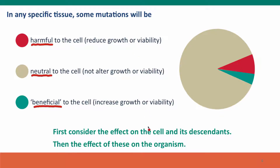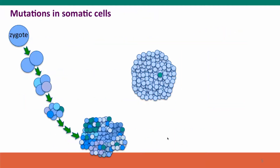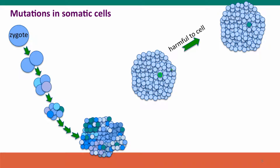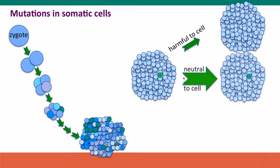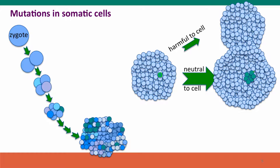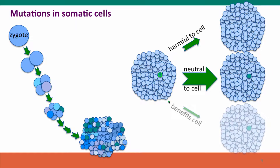First we're going to consider the effect of these mutations on the cell and its descendants, and then how these effects translate into effects on the organism. If a mutation is harmful to the cell, the cell is going to be lost from the population of developing cells — it may die or simply fail to grow. If the mutation is neutral, the cell will behave like all the other cells. If the mutation benefits the cell and increases its ability to grow, the cell is going to outgrow the cells around it, possibly even to their harm.